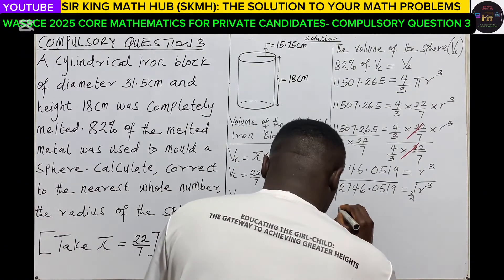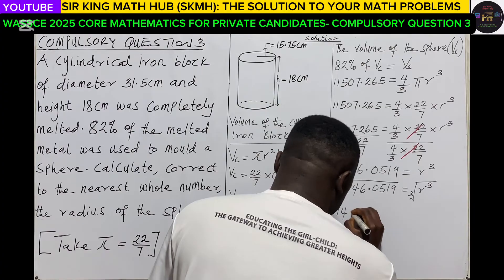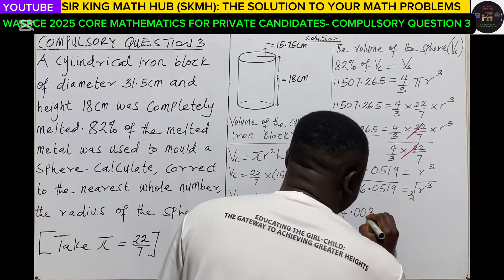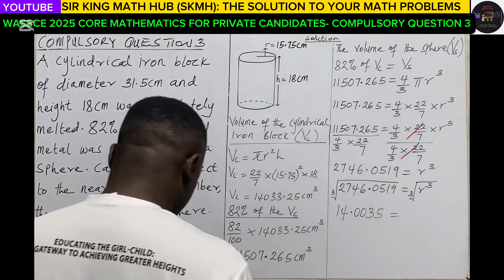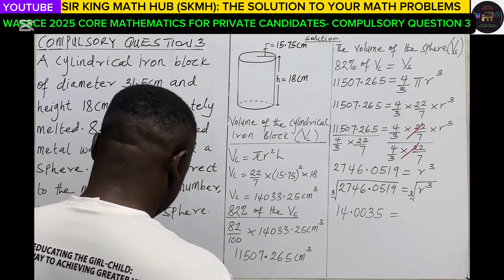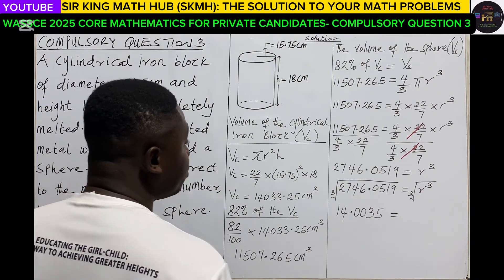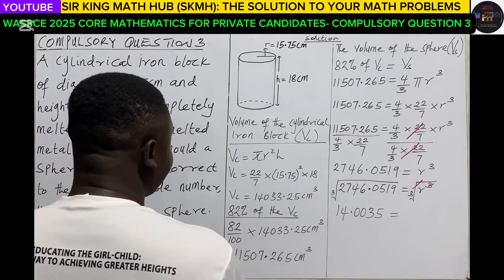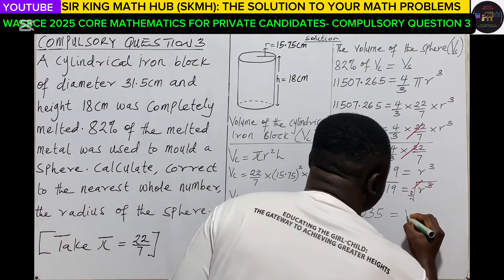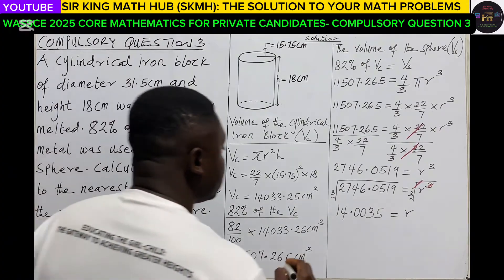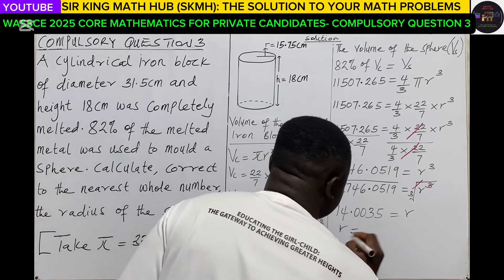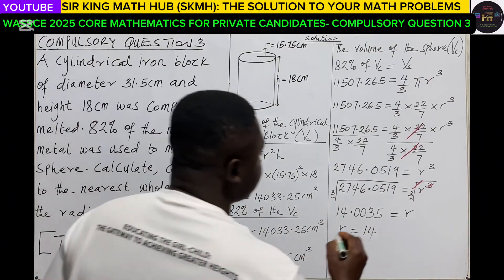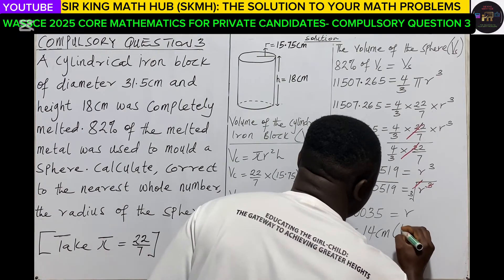So that is 14.0035 to 4 decimal places. Again we can see that the cube root and the cube will cancel out. So we have r on the right, and so r will be 14 centimeters, to the nearest whole number.